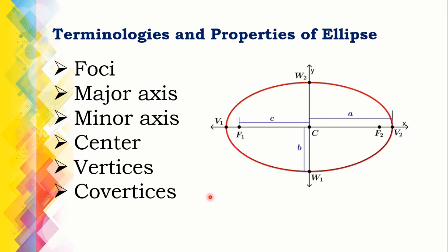We need to be mindful of the terminologies and properties of ellipse. The terms are foci, major axis, minor axis, center, vertices, and co-vertices. The foci are denoted by F1 and F2, and these are along the major axis. The vertices are the endpoints of the major axis, and the midpoint between the vertices is the center of the ellipse. A line perpendicular bisector to the major axis, which passes through the center, is the minor axis. The co-vertices are the endpoints of the minor axis.